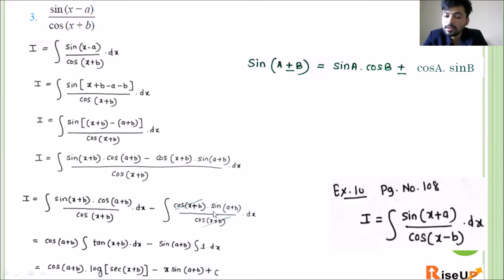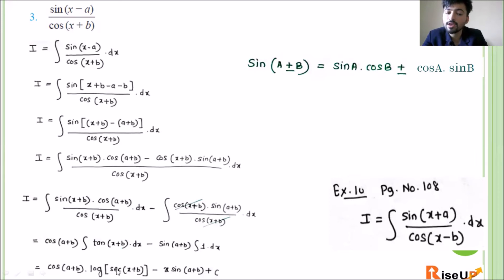For the second integral, cos(x+b) cancels, leaving sin(a+b) times integration of 1 dx, which is x. Since sin(a+b) is also a constant, it comes out. So the second part gives x·sin(a+b). Therefore the final answer is cos(a+b)·log|sec(x+b)| minus x·sin(a+b) + c. This is the solution of the third question.